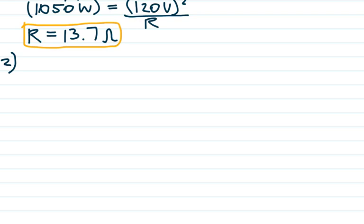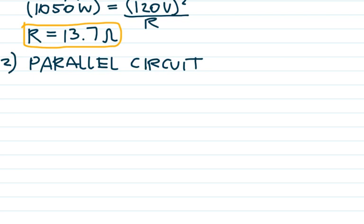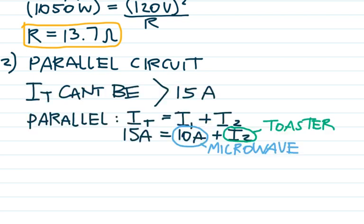When talking about circuits, the first thing you need to do is identify the type of circuit. We're making the assumption that this is in a kitchen — if there's a toaster and a microwave, that's a safe assumption. The problem states that the total current has to be less than 15 amps. The microwave is pulling 10 amps, so if the toaster's current is greater than 5 amps, it's not going to work.